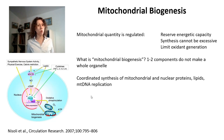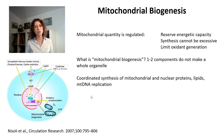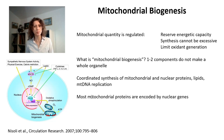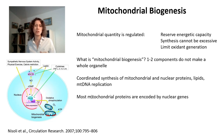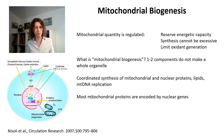To generate more mitochondrial mass involves a coordinated control of mitochondrial and nuclear proteins, lipids, and also the replication of mitochondrial DNA, because we have many copies of mitochondrial DNA per cell. Remember that most mitochondrial proteins are encoded by nuclear genes. Only 13 protein components of mitochondrial oxidative phosphorylation are encoded by mitochondrial DNA. The rest of those 1,500 proteins are encoded in the nucleus, meaning they have to be imported into mitochondria.